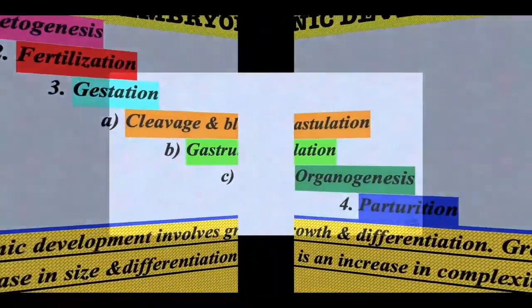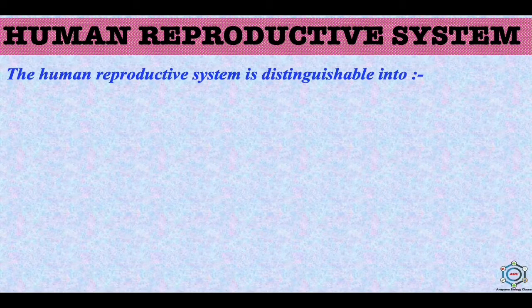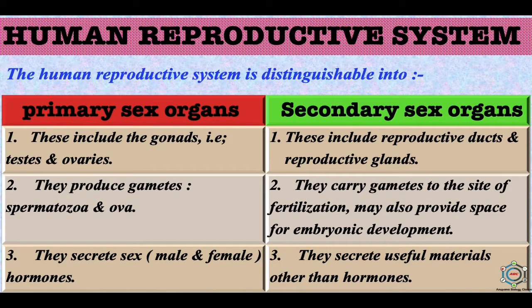Now we will discuss the human reproductive system in detail. Humans are unisexual and show sexual dimorphism. The human reproductive system is distinguishable into primary sex organs and secondary sex organs. Primary sex organs are the gonads — testes and ovaries. Secondary sex organs include reproductive ducts and reproductive glands. Primary sex organs produce gametes — spermatozoa and ova — and secrete sex hormones. In males, these are testosterone and androgens; in females, estrogen and progesterone. Secondary sex organs carry gametes to the site of fertilization and may also provide space for embryonic development.